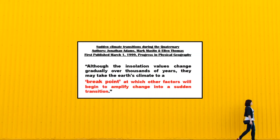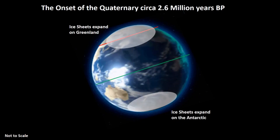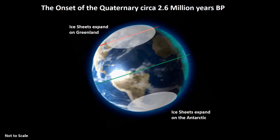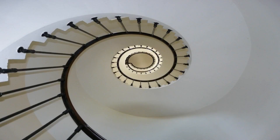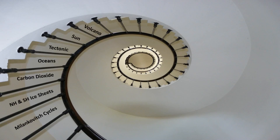However, around 2.6 million years ago the feedback between the other factors and the Milankovic cycles amplified the effects of each other, so that a breakpoint was reached. From this point forwards, the Greenland and Antarctic ice sheets expanded, and a spiral of feedback and accelerating events was set in motion. The increased volume of ice not only disrupted the ocean's conveyor belt, but also captured carbon dioxide and other greenhouse gases, decreasing their concentration in the atmosphere, which in turn caused further cooling and more ice to form.